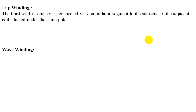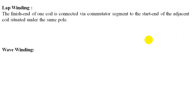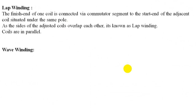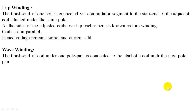Lap winding: the finishing end of one coil is connected via commutator segment to the start of the adjacent coil under the same pole. As the sides of adjacent coils overlap each other, it is known as lap winding. Coils are in parallel, so voltage remains the same and current gets added. Wave winding: the finishing end of a coil under one pole pair is connected to the start of a coil under the next pole pair. The winding forms a wave in its coil — that is why it is called wave winding, also called series winding. Voltage is added and current remains the same in series.